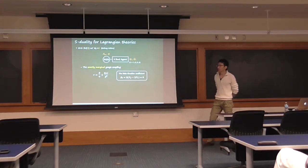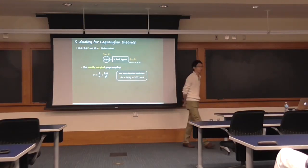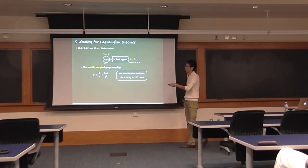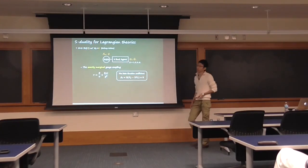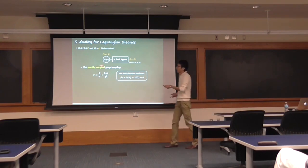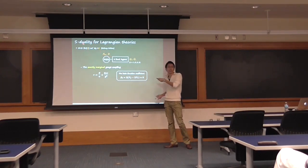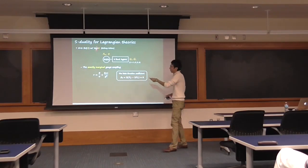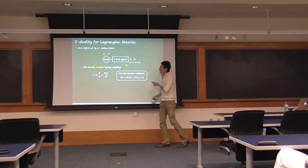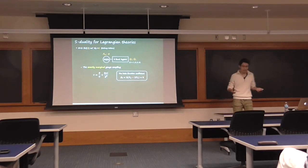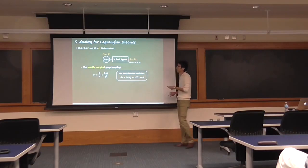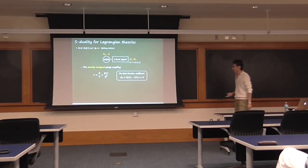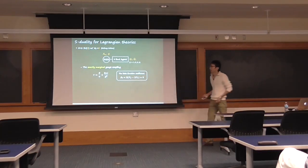Let me first review S-duality for Lagrangian theories. Let me again go back to the simplest example of SU(2) gauge theory with four flavors with N=2 supersymmetry. We have an SU(2) vector multiplet and four fundamental hypermultiplets. Because of N=2 supersymmetry, the bosonic component of the vector multiplet is the gauge field and the adjoint scalar, both in the adjoint representation of SU(2). Each hypermultiplet contains two N=1 chiral multiplets with scalars q and q-tilde for each flavor.